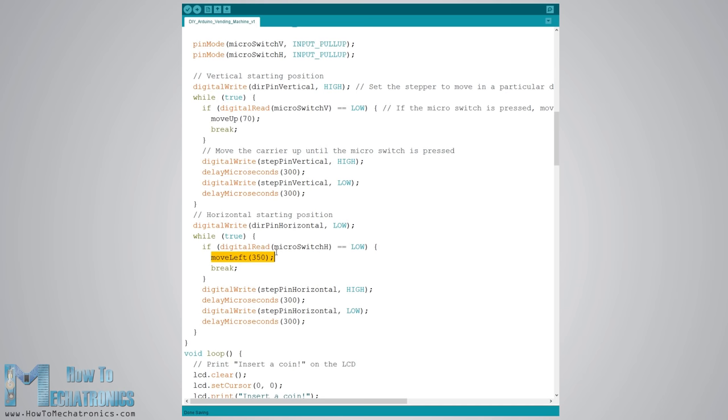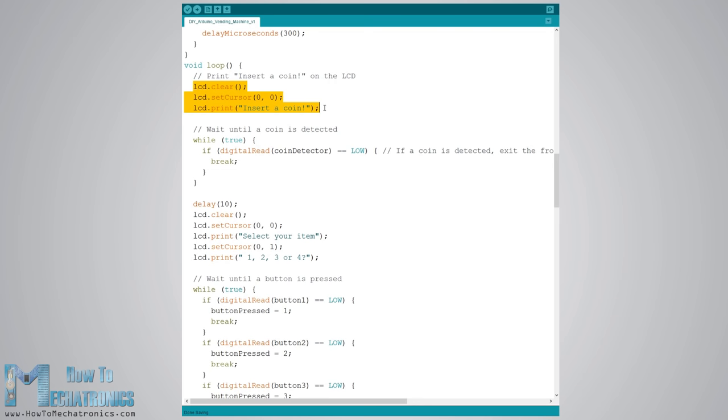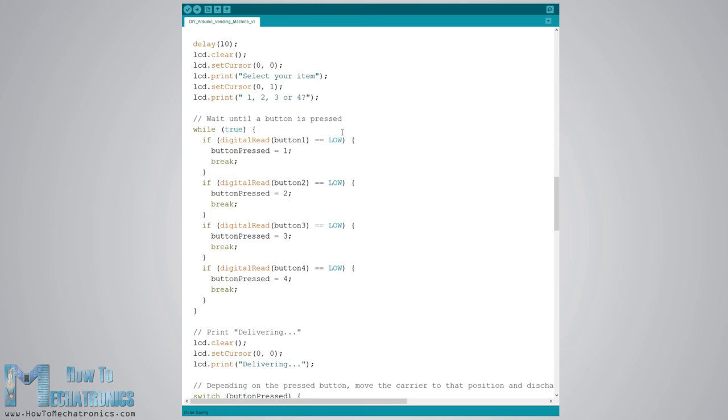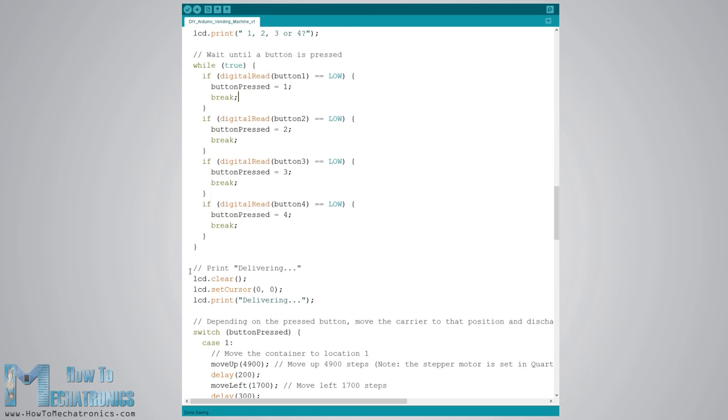In the main program we start by printing on the LCD the message insert a coin, then we get stuck in a while loop. Once we insert a coin and it passed near the proximity sensor the logic state at the coin detector pin will drop to low and in that case we will get out of the while loop using a break statement. Then we print the message select your item and we get stuck in another while loop. This while loop waits for us to press any of the 4 buttons and once we do that we get out of it and print the message delivering.